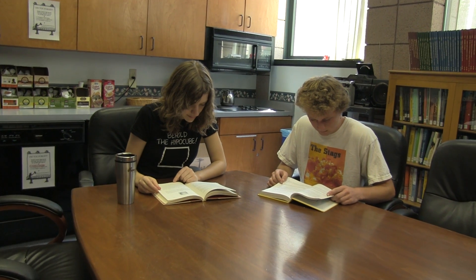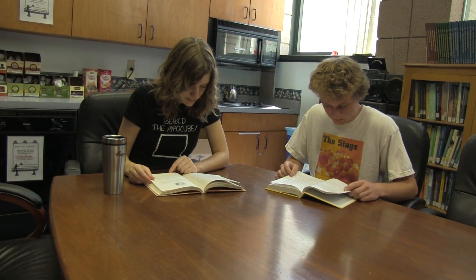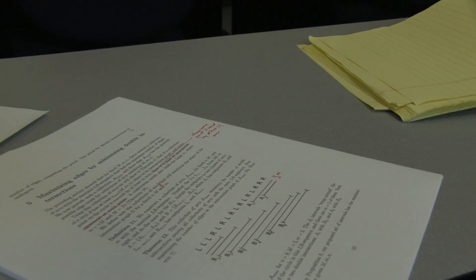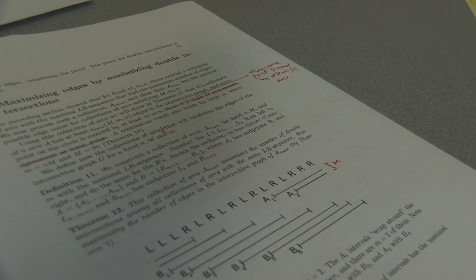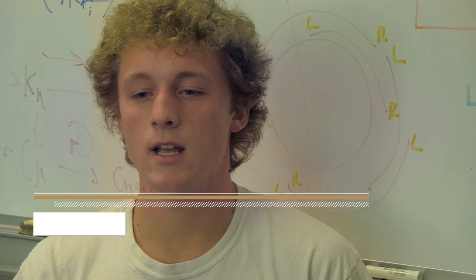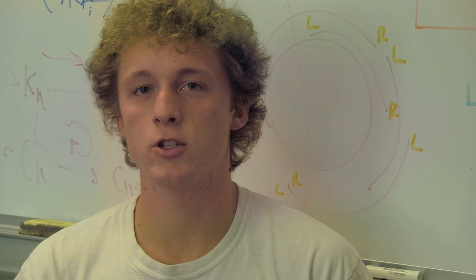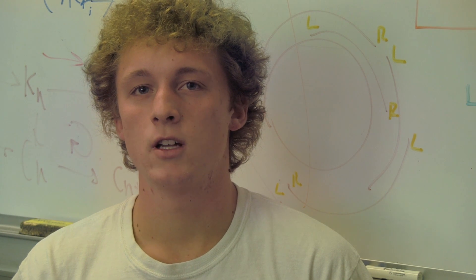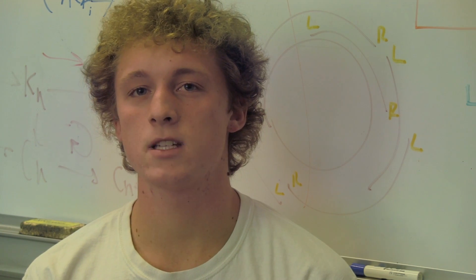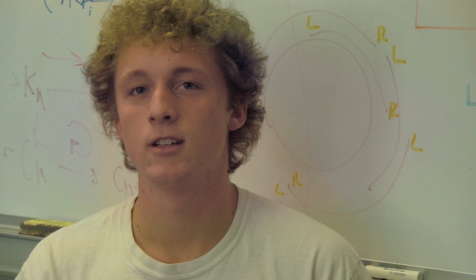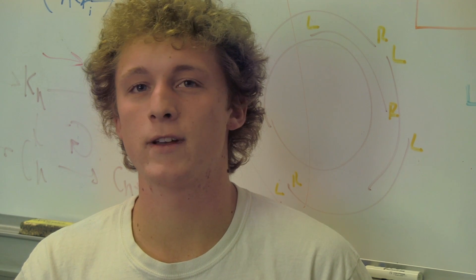The first thing you do as a mathematician is come up with a few examples of what you're looking at, to get an intuition for what's going on and see how everything behaves in those examples. In mathematics you're studying things that are very general, so just looking at a few examples doesn't suffice — but you use that to get an idea of what's going on so you don't start trying to prove things that aren't true.